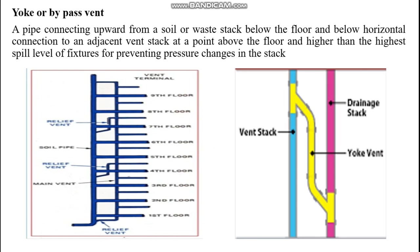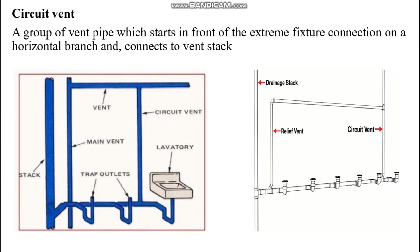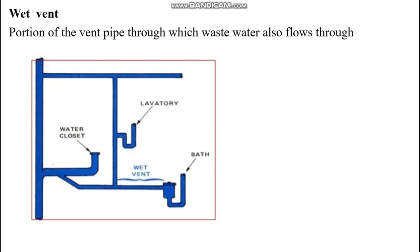Yoke or bypass vent is a pipe connecting upward from a soil or waste stack below the floor and below the horizontal connection to an adjacent vent stack at a point above the floor and higher than the highest spill level of fixtures, for preventing pressure changes in the stack. Circuit vent is a group of vent pipes which starts in front of the extreme fixture connection on a horizontal branch and connects to the vent stack. Wet vent is the portion of the vent pipe through which wastewater also flows.